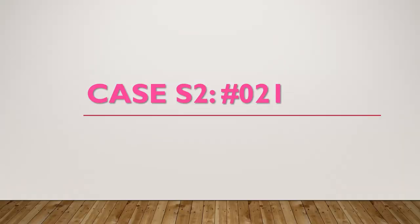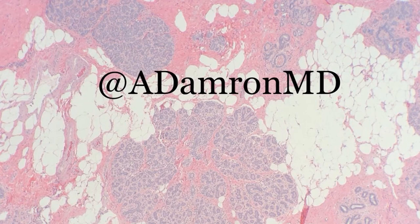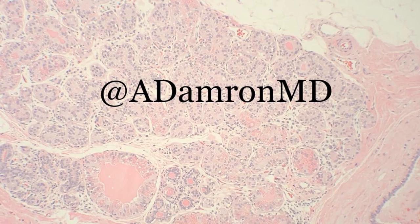Moving on to the next case, for which I didn't provide any history. On low power, what do we see? Something I don't show too often — what really looks like totally normal breast. We've got a very nice terminal duct lobular unit, right? We have a nice duct here and all these acini with a very nice lobulocentric pattern — really nothing abnormal. But then if we looked around in other areas, all of these have a very nice intact myoepithelial cell layer, bland and relatively non-concerning nuclei. But if you look closer, you start seeing — wait a minute — what are all these fine eosinophilic granules in some of these ducts?